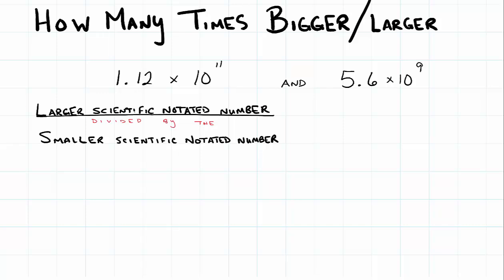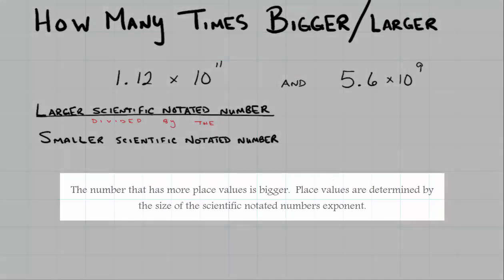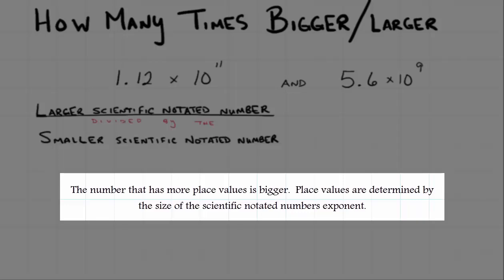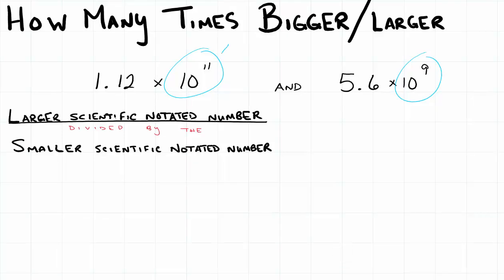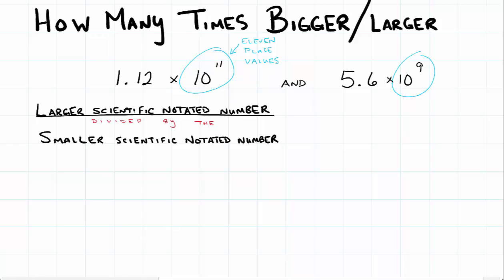So now we need to know which one of these numbers that I've given you up top is the larger number. And that all comes to place values. Whoever has the most place values in a scientific notated number is the larger number. And this is saying that this one has 11 place values. When we compare that to nine place values over here, obviously I'd rather have 11 place values in my numbers. That one's bigger.